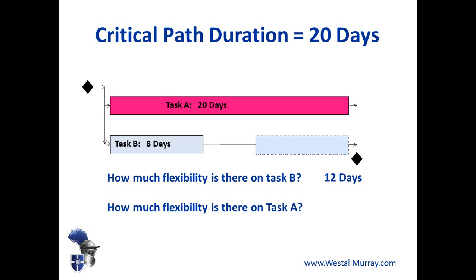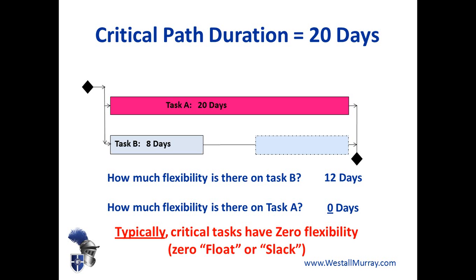But what about Task A — how much flexibility do we have there? Well, zero. If we take a break in the middle of Task A and don't do anything for a couple of days and then come back and finish it off, the project is going to be longer. So here's the thing about critical tasks: typically they don't have any flexibility. The term used for scheduling flexibility is float or slack — either of those terms is acceptable on your PMP exam.